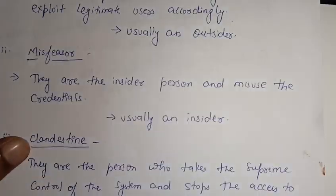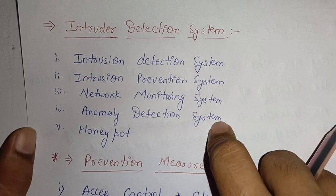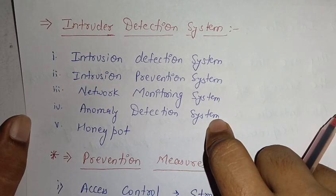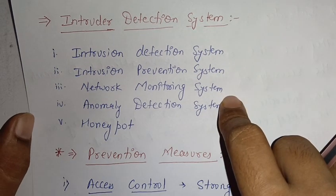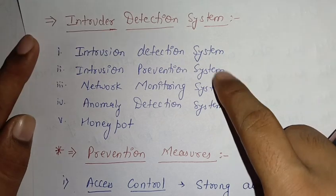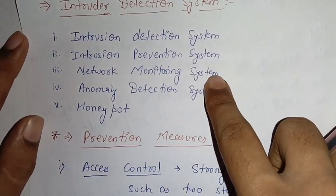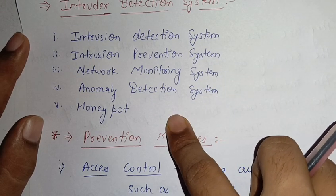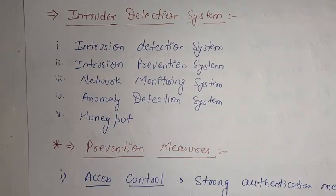Now we will see how many types of detection systems are there. There are five intruder detection systems: first is the Intrusion Detection System, second is the Intrusion Prevention System, third is the Network Monitoring System, fourth is the Anomaly Detection System, and fifth is the Honeypot.